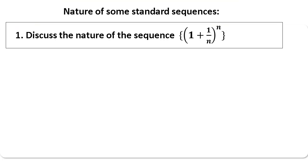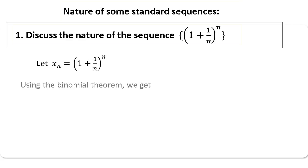Let us consider the first one. Discuss the nature of the sequence (1 + 1/n)^n. Let us state the nth term of the sequence: xn = (1 + 1/n)^n. We shall use binomial expansion to expand the right-hand side.